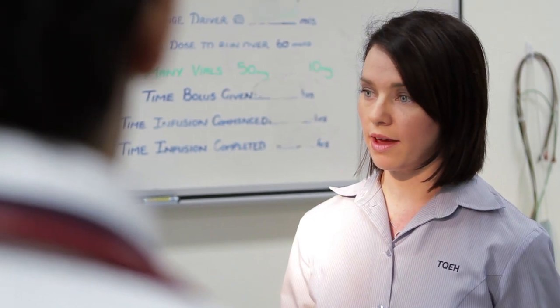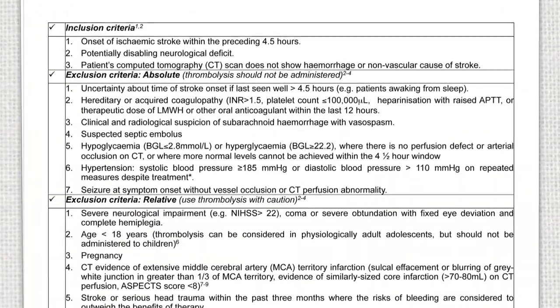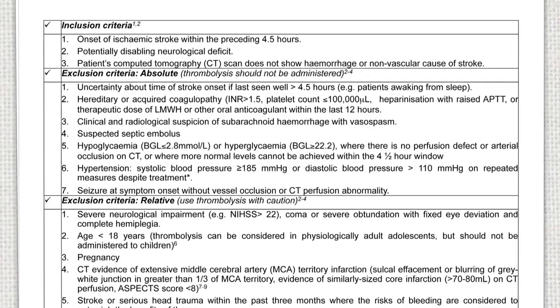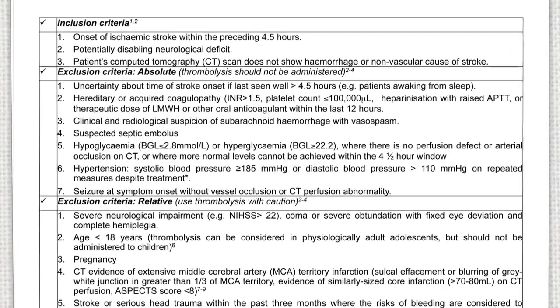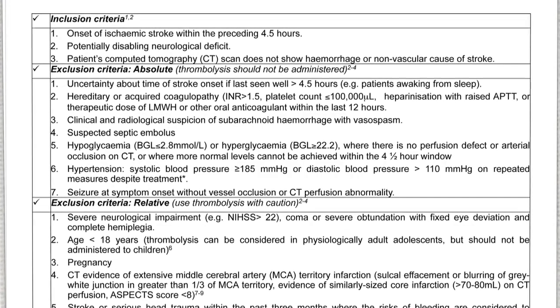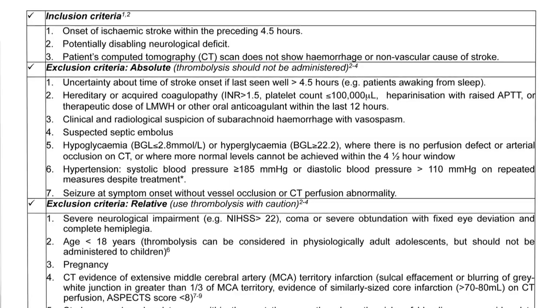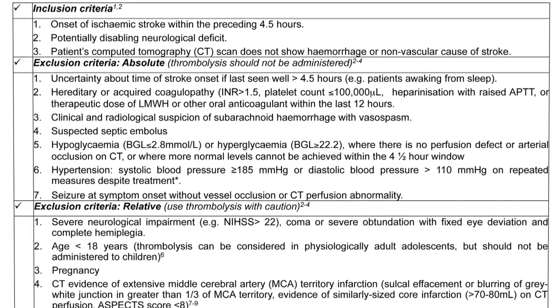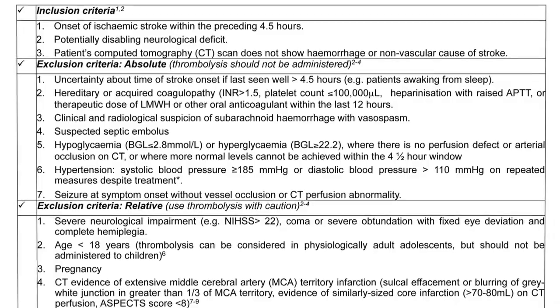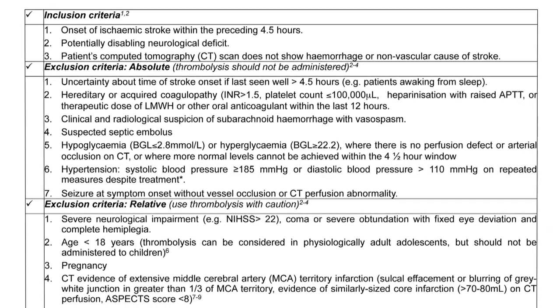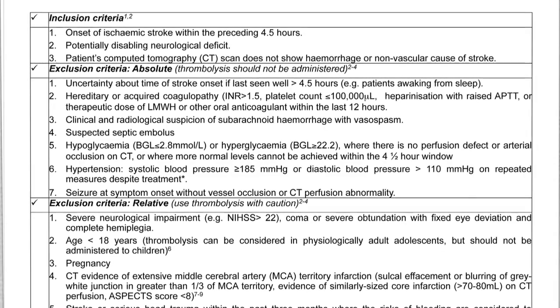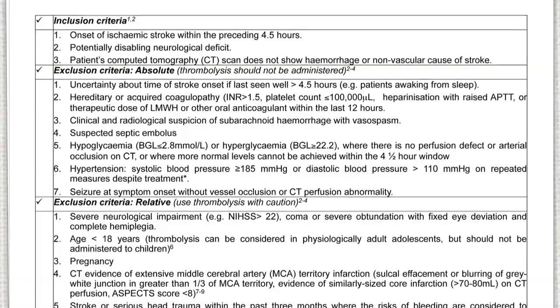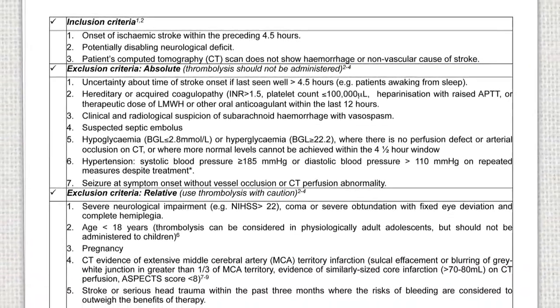Reassure the patient they will be monitored very carefully for signs of deterioration over the next 24 hours. Absolute contraindications to thrombolysis include: no clear time of onset, uncontrolled blood pressure of 185/110, serious bleeding or clotting disorders, an INR greater than 1.5, or seizure at onset without vessel occlusion. Relative contraindications include recent heart attacks, strokes, head injuries, a very severe stroke with NIHSS greater than 22, or recent operations or biopsies.